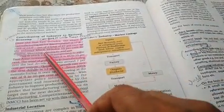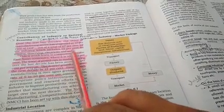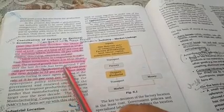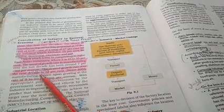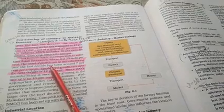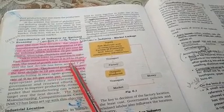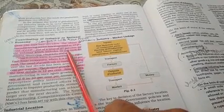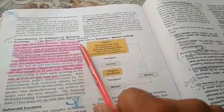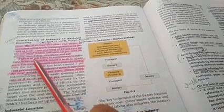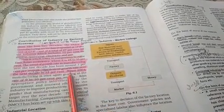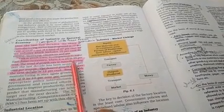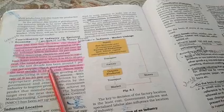अगर हम comparison करें तो यह बहुत कम है, where it is 25% to 35%. जहाँ पर यह 25% से 35% है। Total की बात करें तो 27% है, otherwise 17% है यदि हम mining, quarrying, electricity और gas को छोड़ दें। जो East Asian countries हैं, वहाँ पर industry का contribution 25 से 35% है।